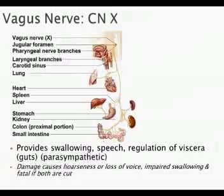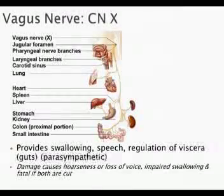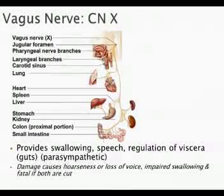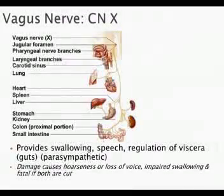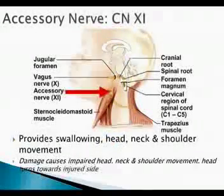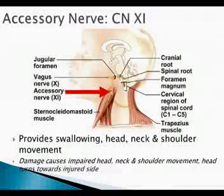CN10, the vagus nerve, also passes through the jugular foramen. It gets its name because it's like a wanderer — it travels all over the body to different organs, including the lungs, heart, stomach, and throat. It helps with swallowing and speech, but also with regulation of the gut and the parasympathetic nervous system. CN11, the accessory nerve, also passes through the jugular foramen and allows you to swallow and move your head back and forth.